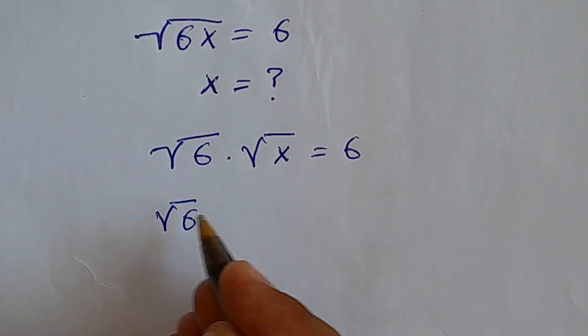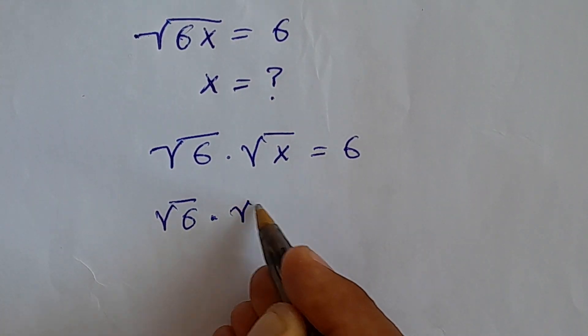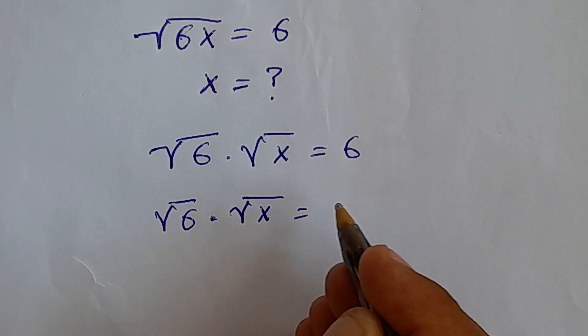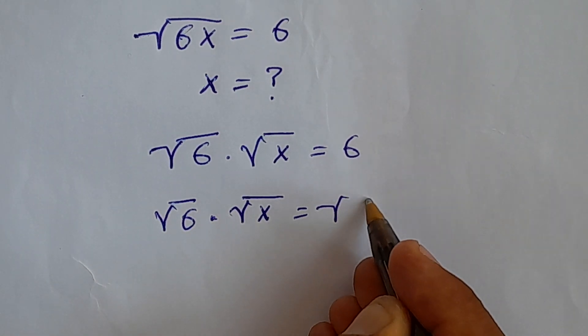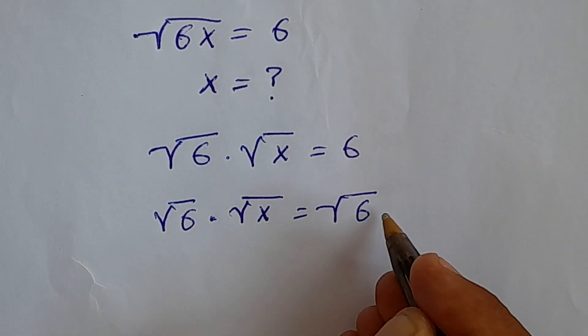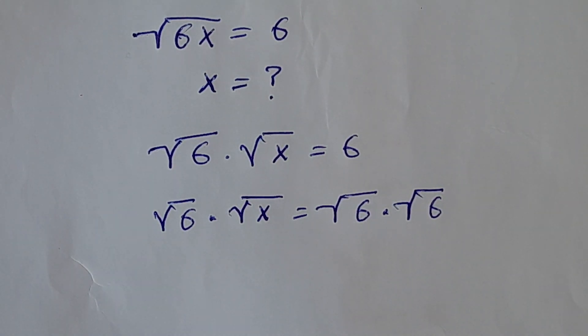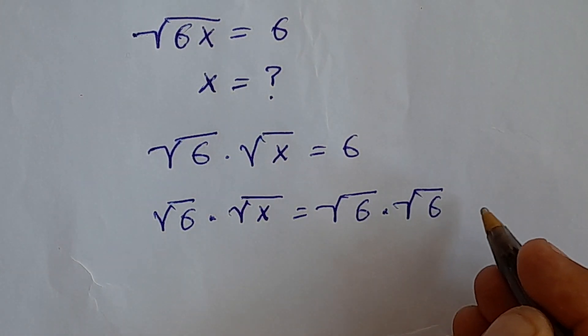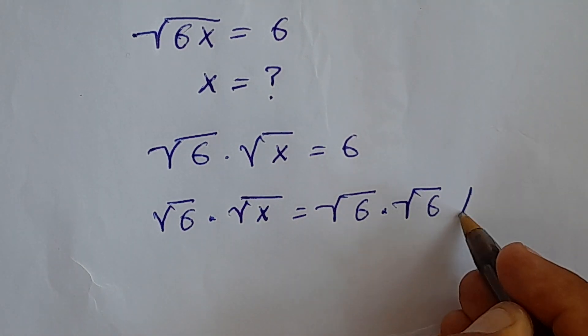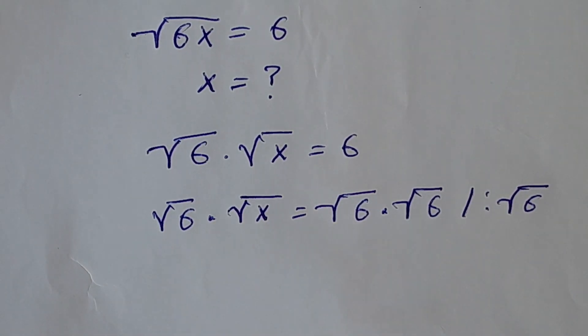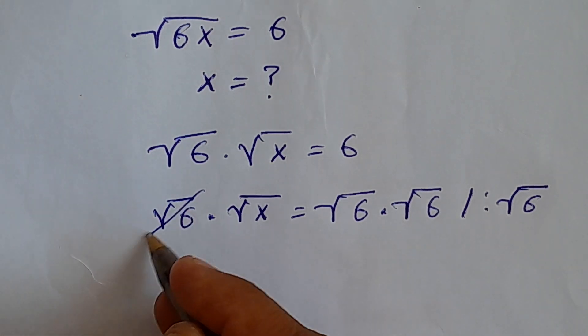Now, square root of 6 times square root of x equals to, instead of 6, I can write the square root of 6 times square root of 6.